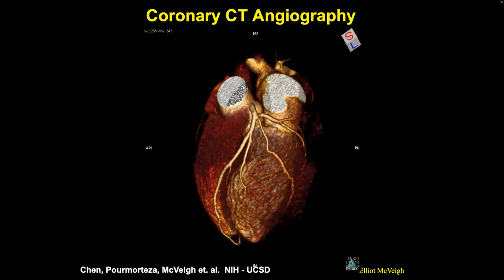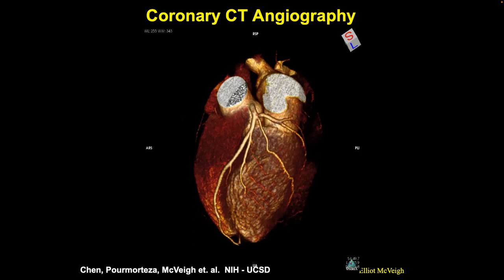All of that detailed coronary anatomy was obtained in 150 milliseconds. Nuclear medicine, echocardiography, and MRI cannot come close to this capability. CT is remarkably better than all other methods for imaging the heart.